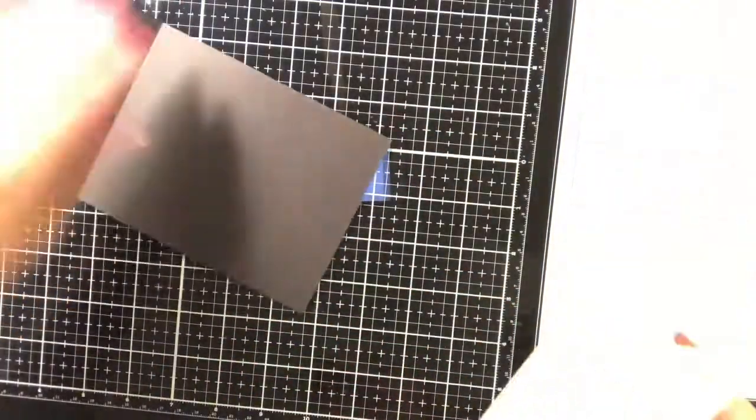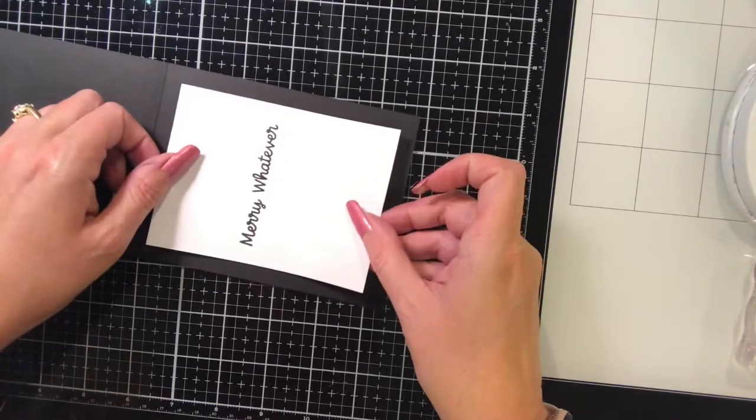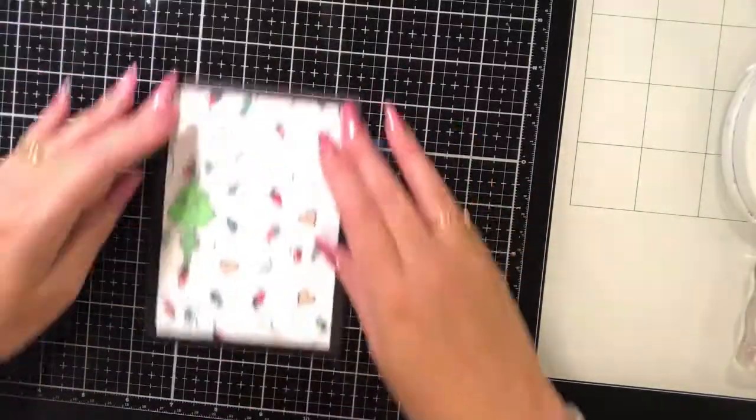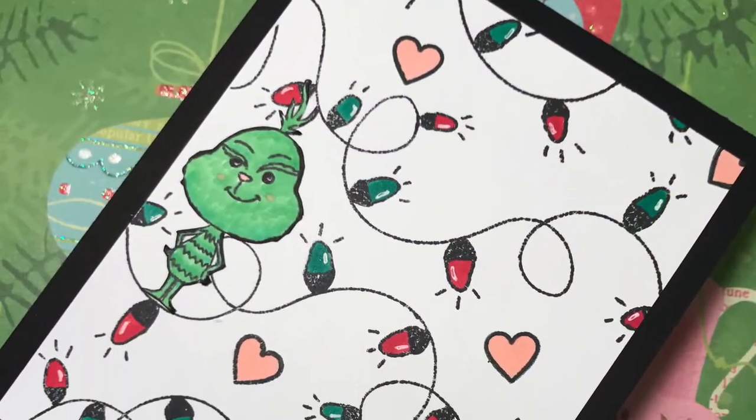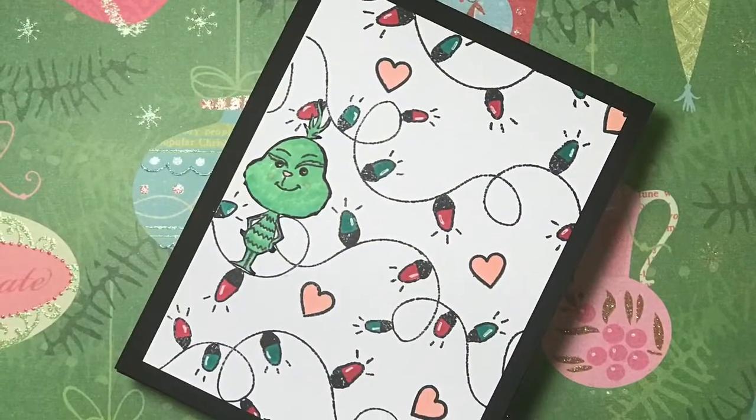You can write with a silver gel pen or a white gel pen, but I like to have a piece of white cardstock so you can use whatever color you want. But that's the end of the card. Thank you guys so much for watching. If you have comments or questions, please feel free to leave them below. And I will see you guys again soon for another video. Bye!